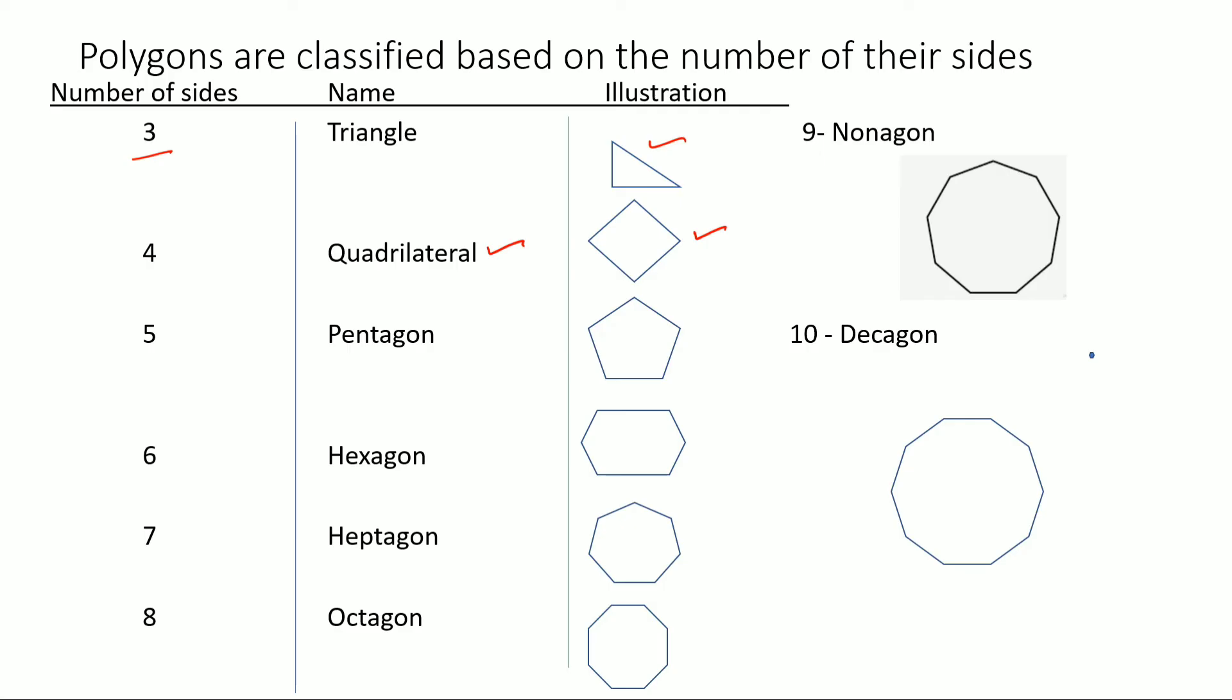But then they have some special properties. That's why they have special names. Otherwise, all of these are quadrilaterals.